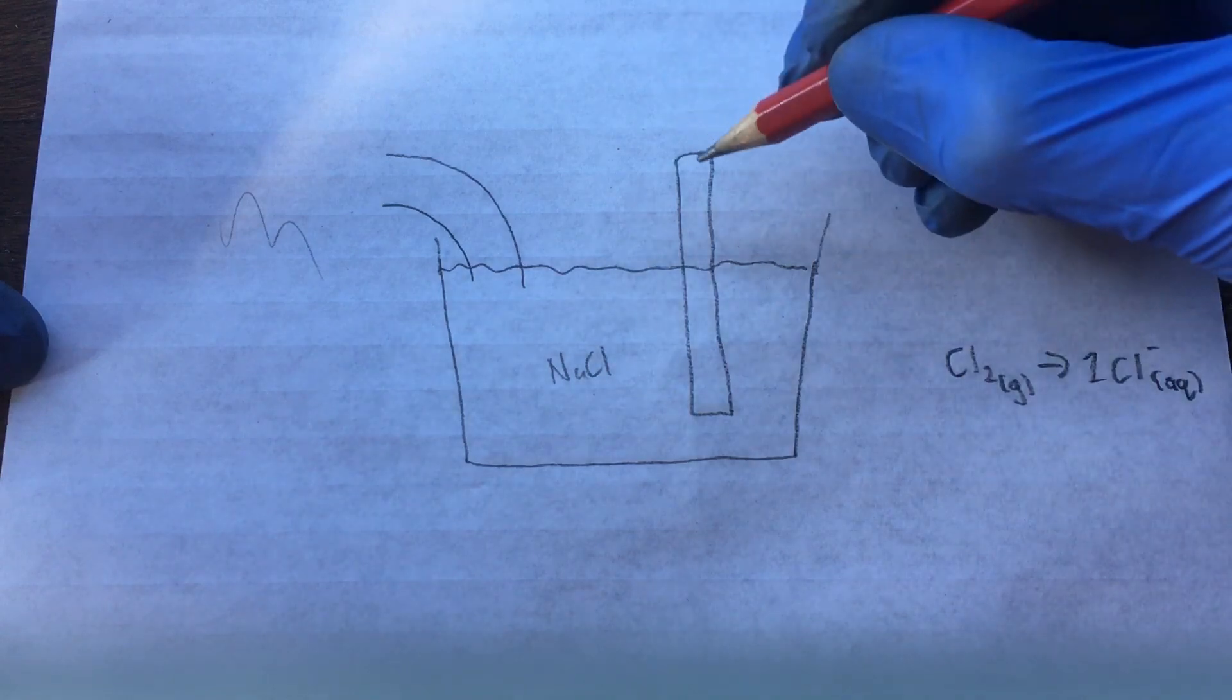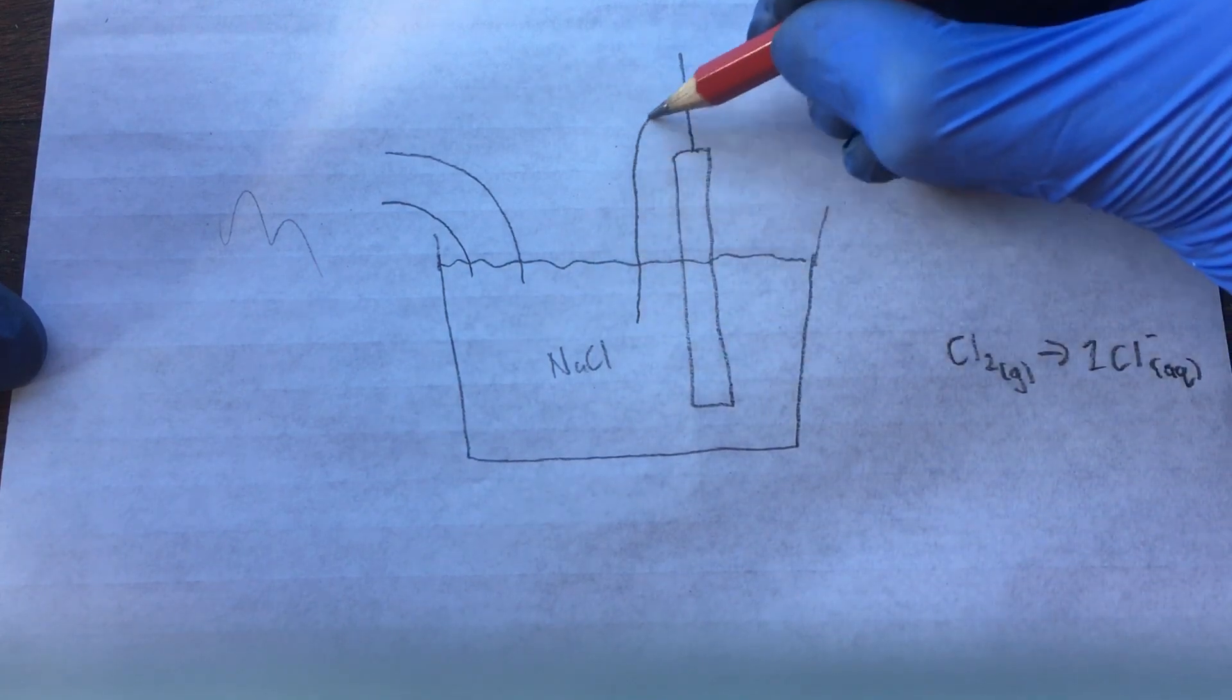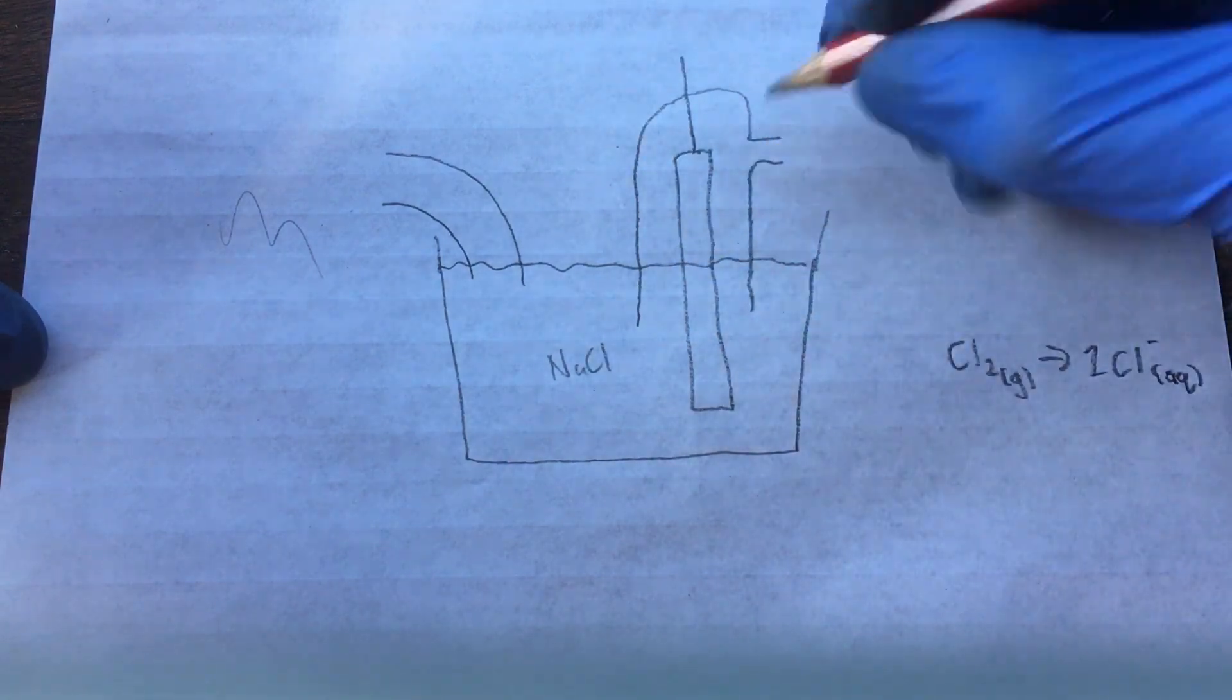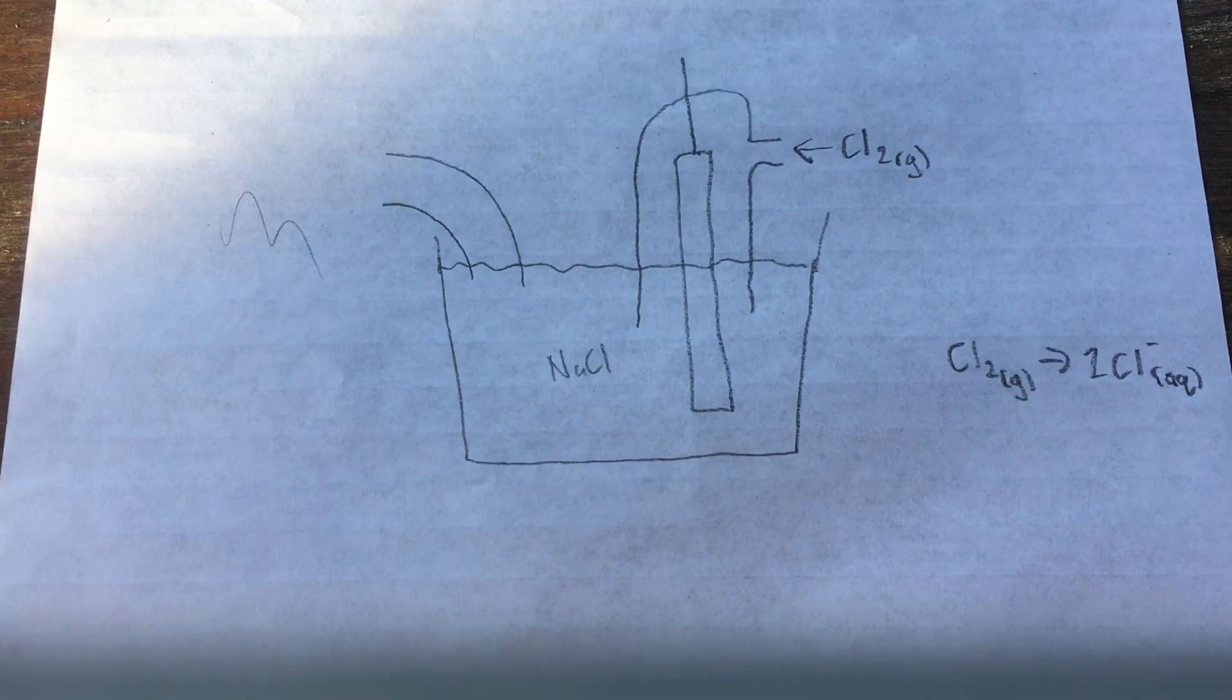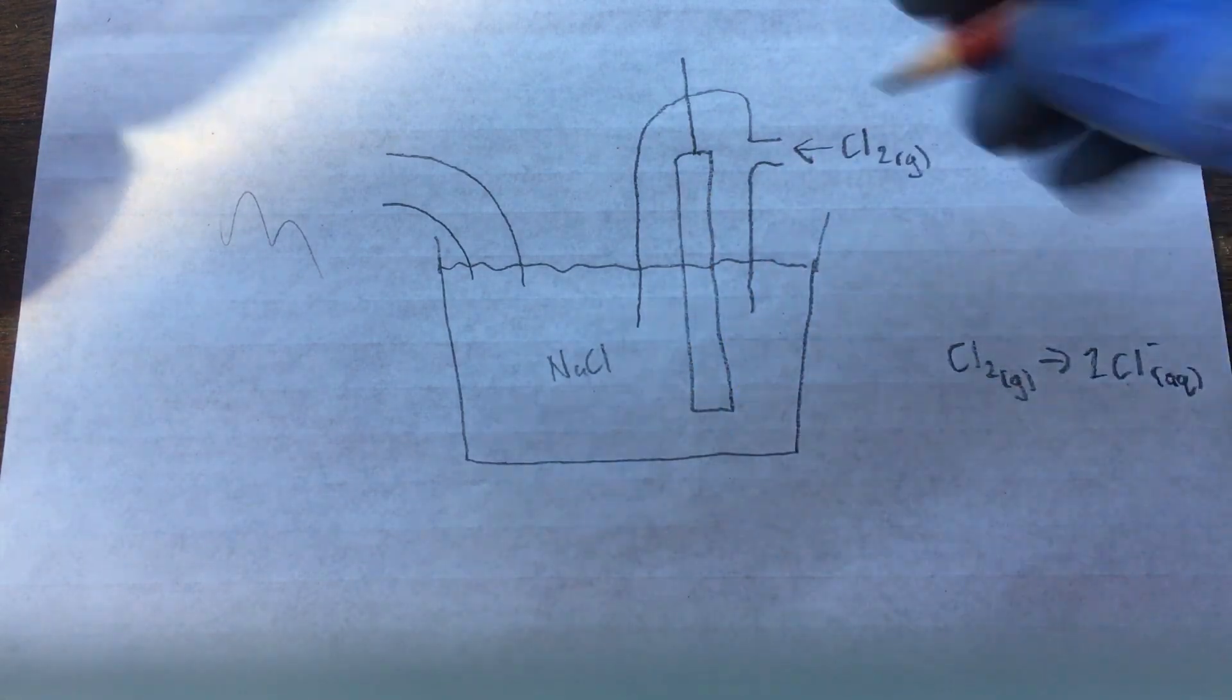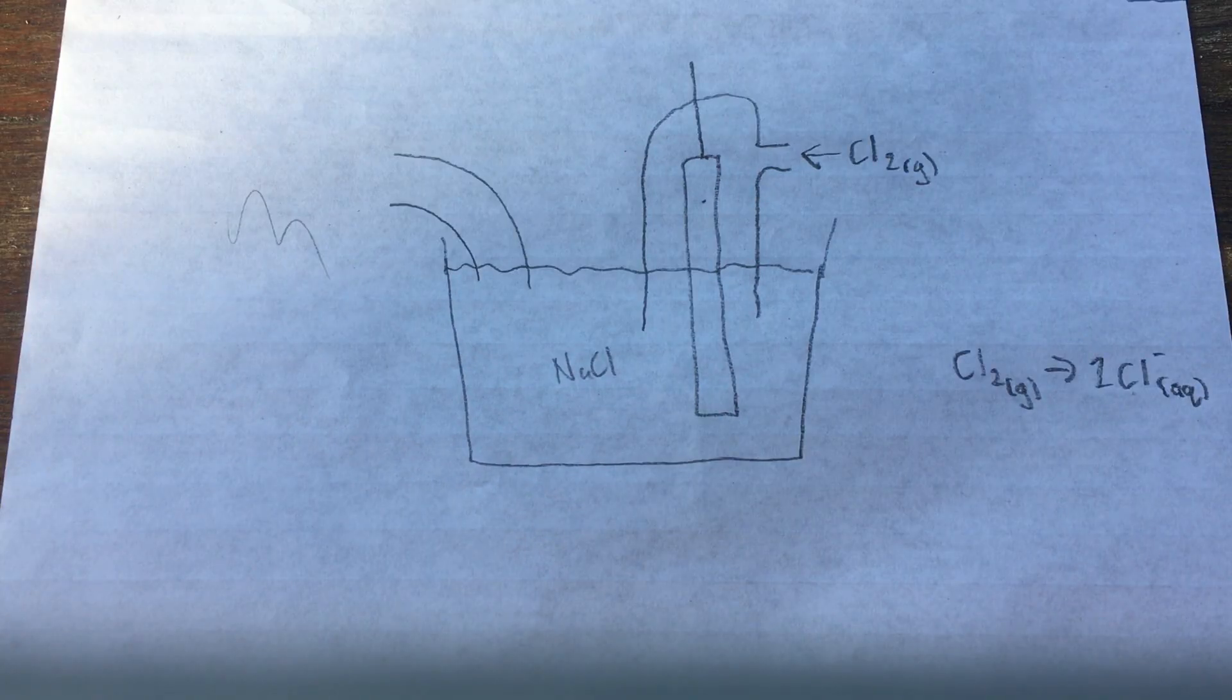Now to do this obviously we need that reduction reaction to occur on the electrode surface. So let's say we have, this is how I learnt to draw it back in high school, some kind of enclosed container over the electrode and we have an input of chlorine gas. And now on the electrode surface, provided that we have the rest of our electrochemical cell set up correctly and our electrode is inert, chlorine should react on the electrode surface in the reduction reaction here.